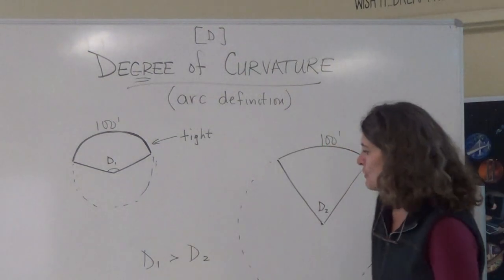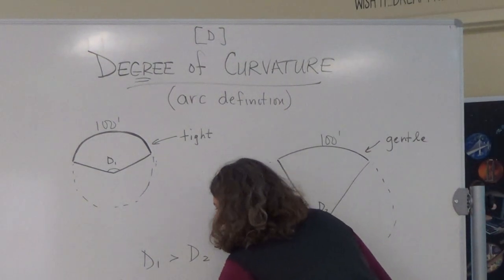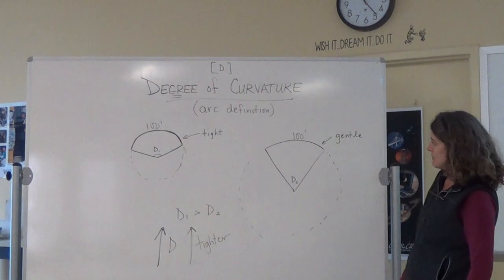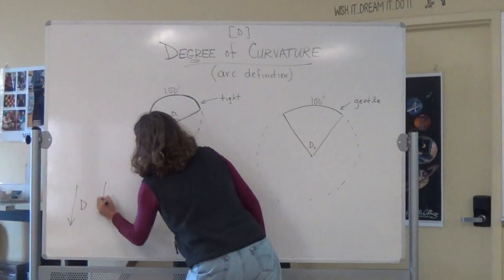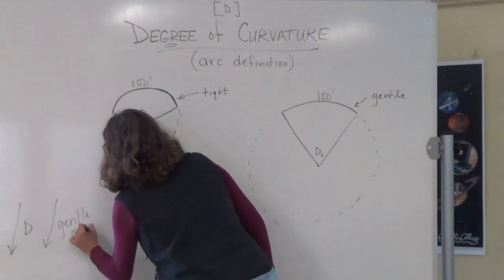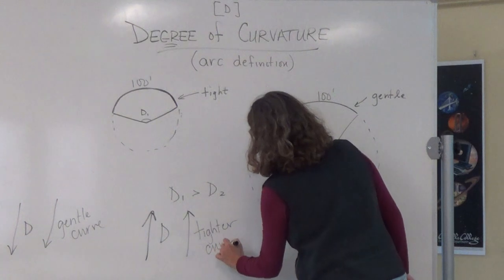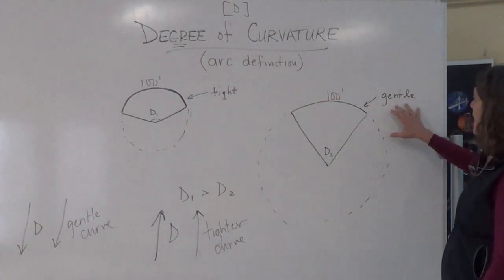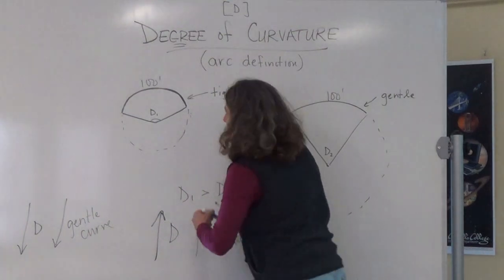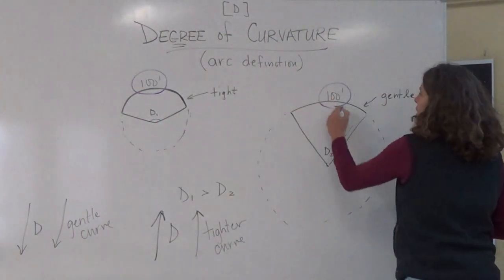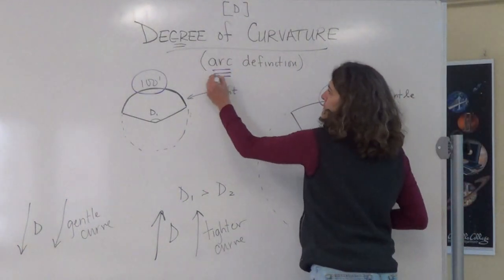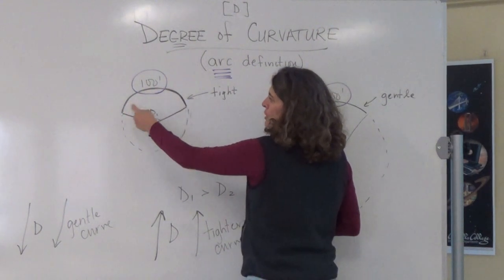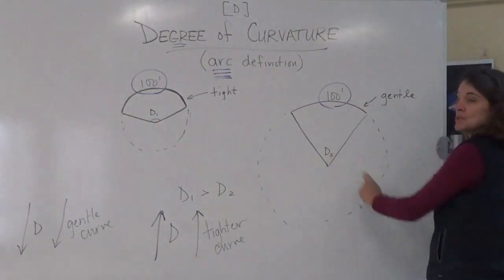What would you say about how tight these curves are? This one is a tighter curve and this one is more gentle. As the degree of curvature increases, the curve is tighter. As the degree of curvature decreases, we have a more gentle curve. So the degree of curvature is basically describing how tight or how gentle a curve is. The definition of degree of curvature for the arc definition is that it is the interior angle that encompasses 100 feet of arc.